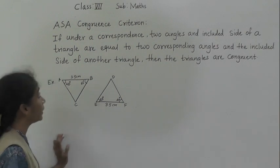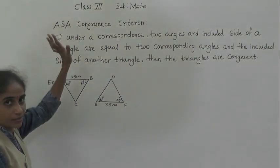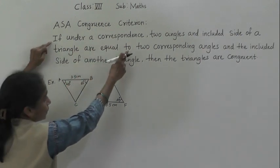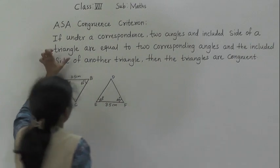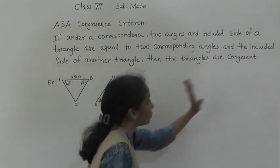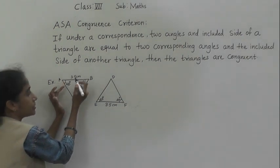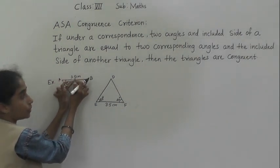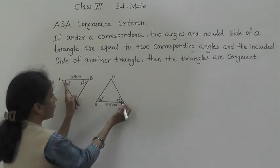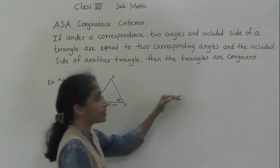Now let's learn the ASA congruence criterion. ASA means angle, side, angle — two angles and the included side. If under a correspondence two angles and the included side of a triangle are equal to the two corresponding angles and the included side of another triangle, then the triangles are congruent. See: these are the two angles and this is the included side.